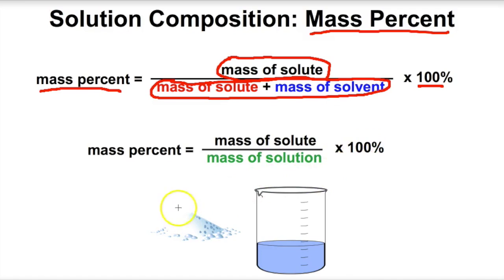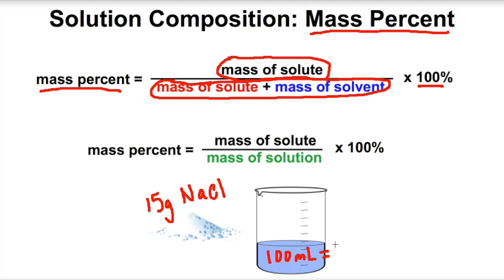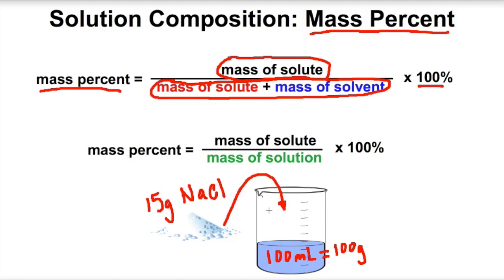Let's suppose we have 15 grams of NaCl and 100 grams of water. You know that 100 milliliters of water equals 100 grams of water because the density of water is 1 gram per milliliter. So we're going to scoop the 15 grams of salt into this beaker of water, stir it up, and now we have a salt water solution. We want to figure out the mass percent.